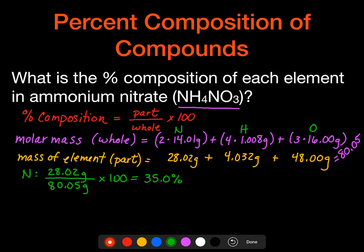For hydrogen, we're going to have our 4.032 grams divided by 80.05 grams times 100, and we get 5.0%.